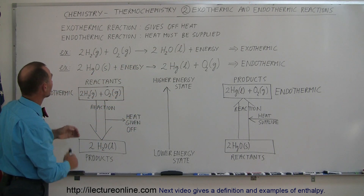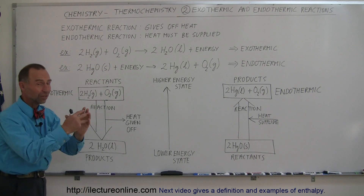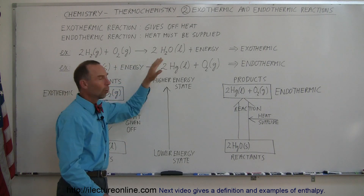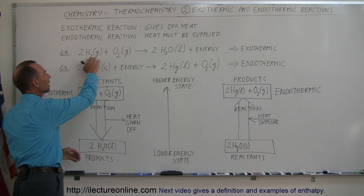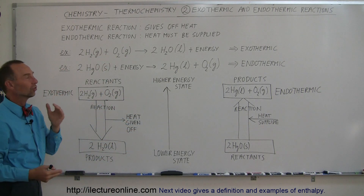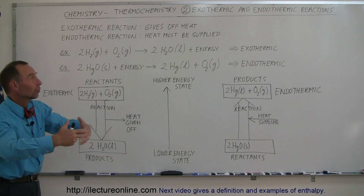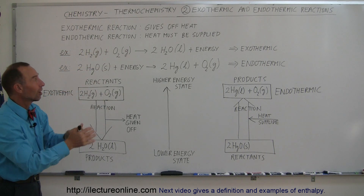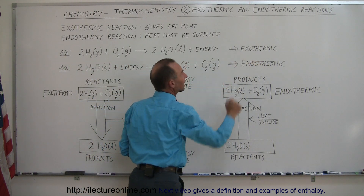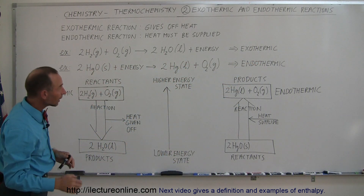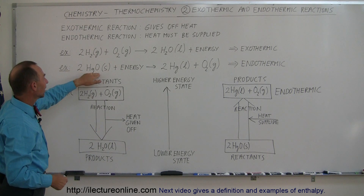Here are the examples. Let's say we have some hydrogen gas and some oxygen gas. When you put that together, you end up with water. Water is a lower energy state. Hydrogen gas and oxygen gas is a higher energy state. So going from a higher to lower energy state, the reaction gives off heat, and heat is supplied to the environment — therefore it's exothermic.